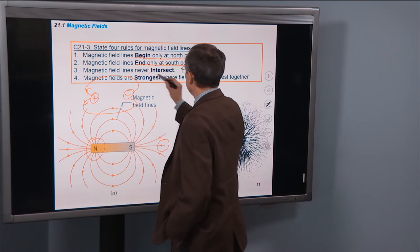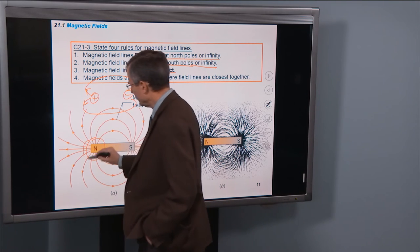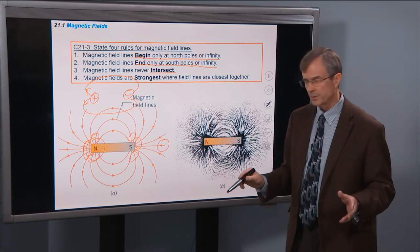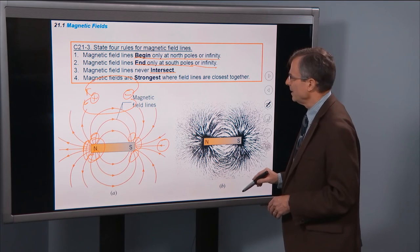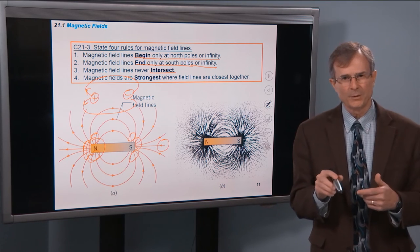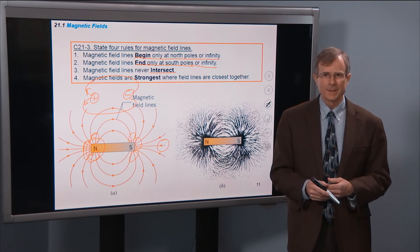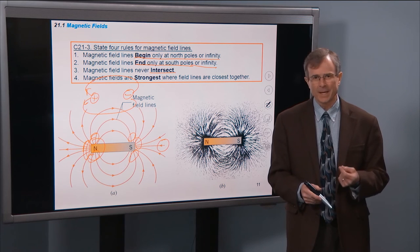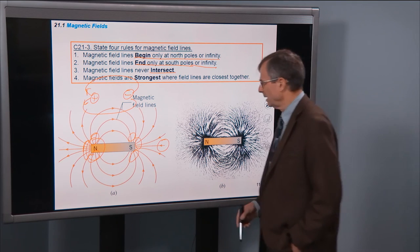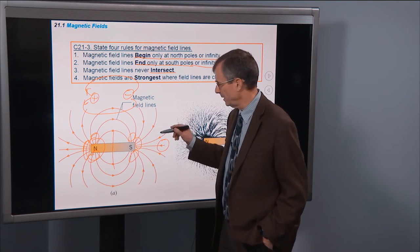Magnetic field lines never intersect. Magnetic fields are strongest where the field lines are closest together, so you expect really strong fields near the poles and weaker fields farther from the bar magnet. Rule number five for electric fields dealt with the number of field lines versus charge magnitude. Here, there is no such thing as a magnetic monopole — you cannot isolate a north pole or a south pole. If you try to cut the magnet in half with a hacksaw, you'd think you'd get a north pole on one side and a south pole on the other.